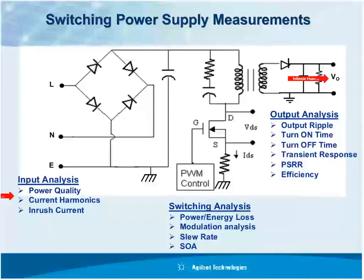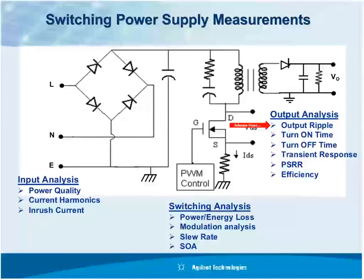For switching circuitry analysis, you want to see how much losses are occurring — probably the most important measurement — along with modulation analysis, slew rate, and safe operating area. On the output, the most important measurement is the quality of the output ripple. Transient measurements include turn-on time, turn-off time, and transient response — which is a unique measurement not typically available using an oscilloscope. Also power supply rejection ratio, and ultimately efficiency as output versus input.